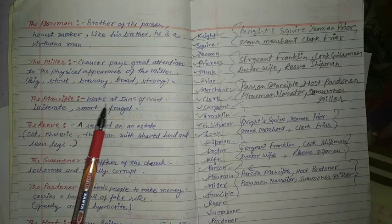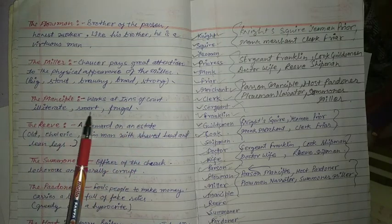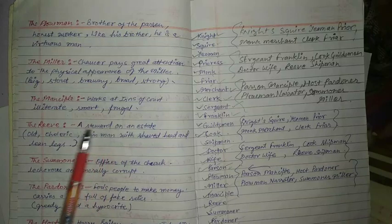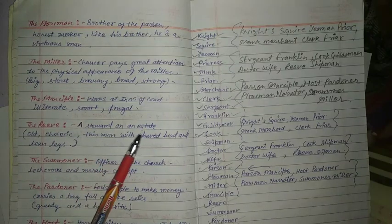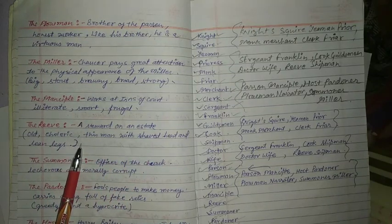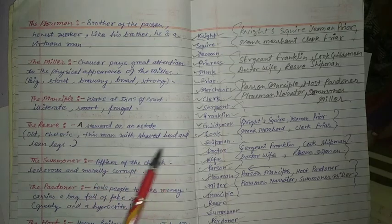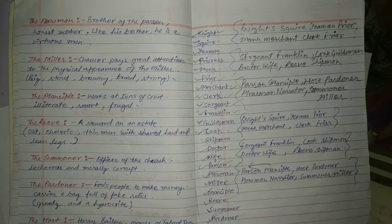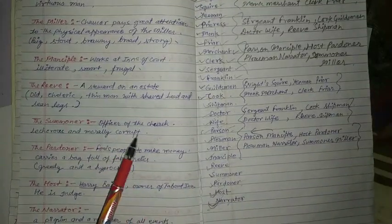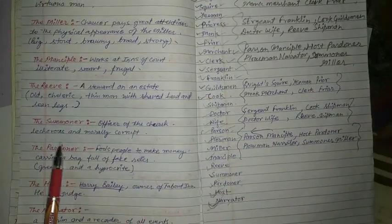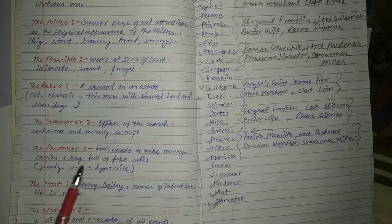The Manciple works at the Inns of Court — he is illiterate but smart and frugal. The Reeve is a steward, described as an old, choleric, thin man with a shaved head and lean legs. The Summoner is an officer of the church who is literate but morally corrupt.